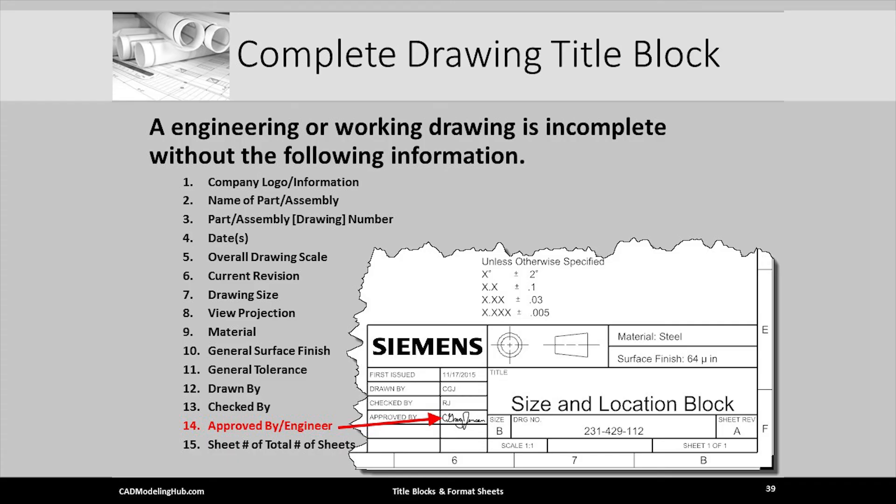This is the approved by or engineer cell. Either the project or lead engineer digitally signs the drawing or it is physically signed after it is printed.